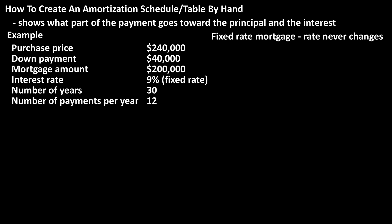As an example, let's say that someone purchases a house for $240,000 and puts $40,000 down, so they have a mortgage of $200,000. It's at a rate of 9%, the loan is for 30 years, and the number of payments per year will be 12.